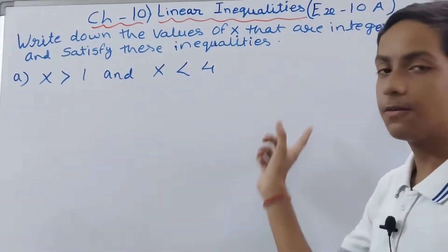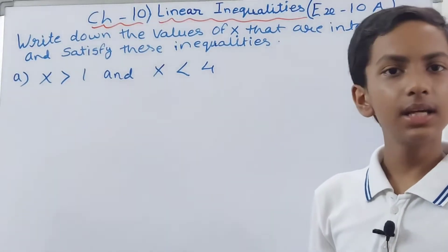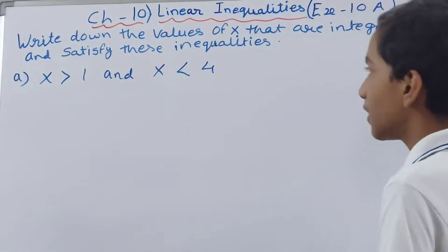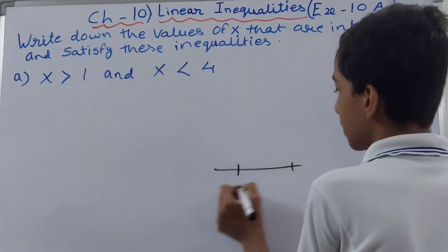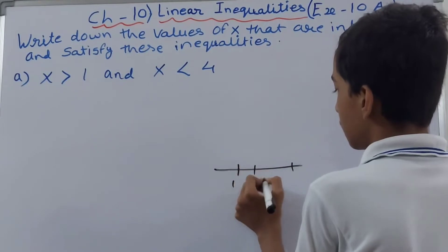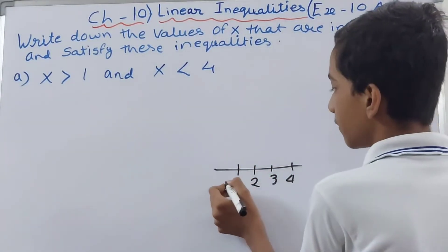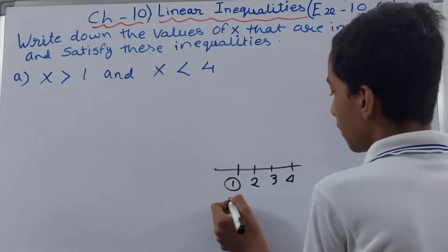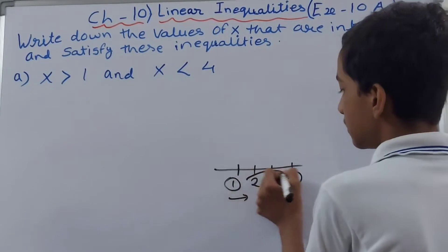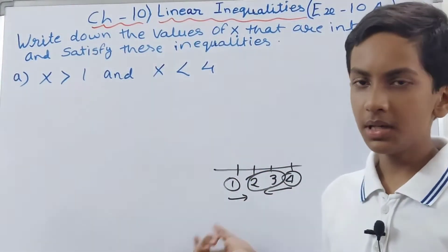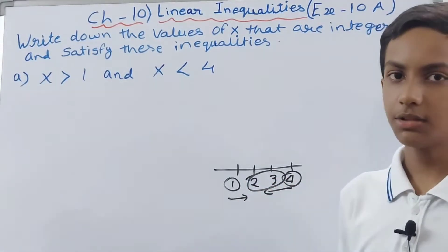The value of x has to be more than 1 and less than 4. If you are still not able to understand, you can take the help of a number line. Here on the number line: 1, 2, 3, 4. The value of x has to be more than 1 and less than 4, so x will be 2 or 3.